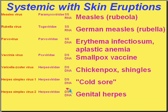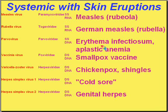Viruses are generally either double-stranded DNA, sometimes single-stranded, or single or double-stranded RNA. In the skin family, these are common viruses we have heard of. We've heard of measles, also known as rubeola. The German measles variant is called rubella. There's another common skin virus in the parvoviridae family — parvovirus — causing a disease called erythema infectiosum, also associated with aplastic anemias.